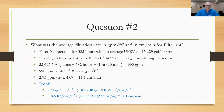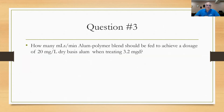Question number three asks: how many milliliters per minute of alum polymer blend should be fed to achieve a dosage of 20 milligrams per liter dry basis alum when treating 3.2 million gallons per day? The plant uses an alum polymer blend, only part of which is alum — the rest is water and polymer. We'll find from the table how much is actually dry basis alum and go from there.